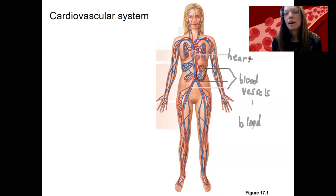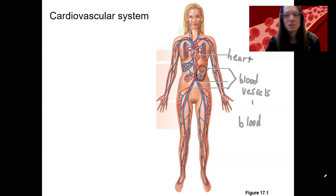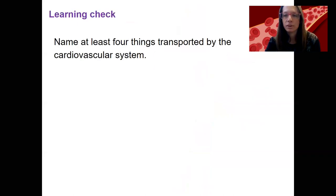We're going to start with the blood. The blood's job is to transport cells and dissolved materials throughout the body, and this is important for homeostasis. I want you to do a learning check first and name at least four things that are transported by the cardiovascular system via the blood.